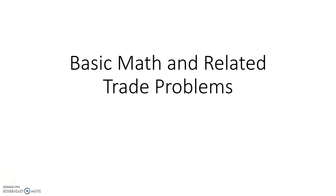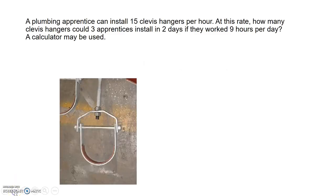Here is a short plumbing trade calculation video dealing with basic math and trade-related problems. Our first problem: a plumbing apprentice can install 15 clevis hangers per hour. At this rate, how many clevis hangers could three apprentices install in two days if they worked nine hours per day?